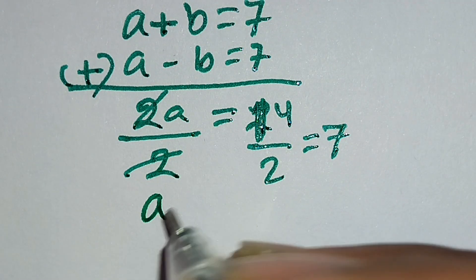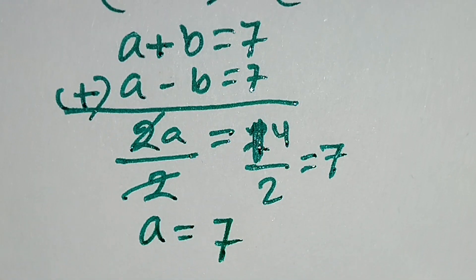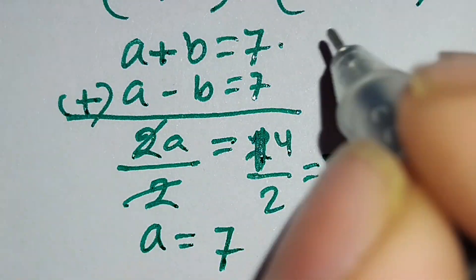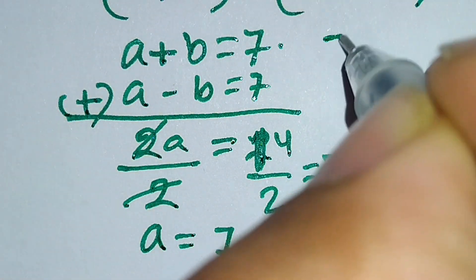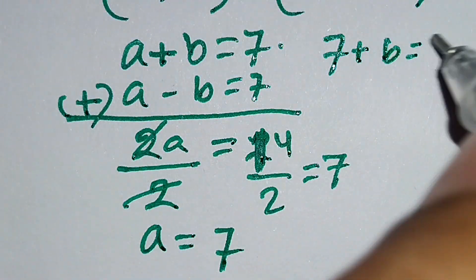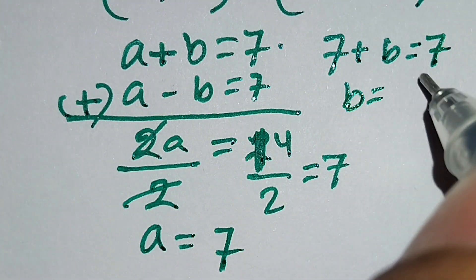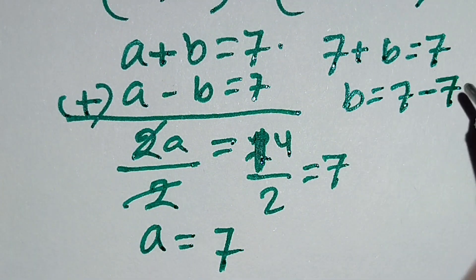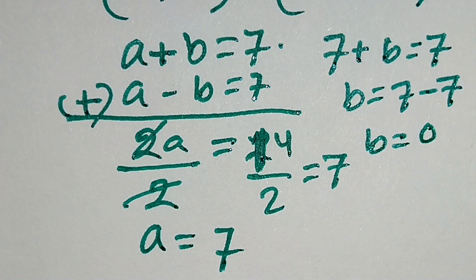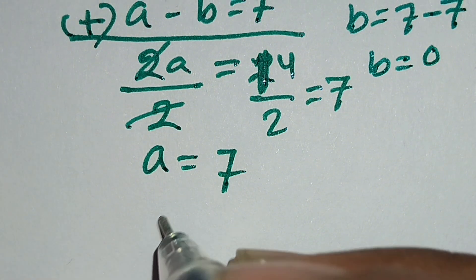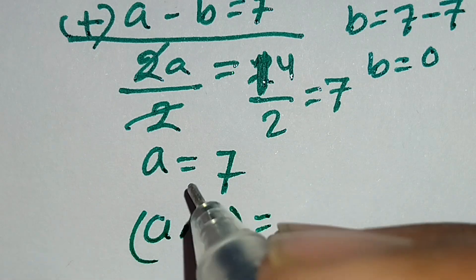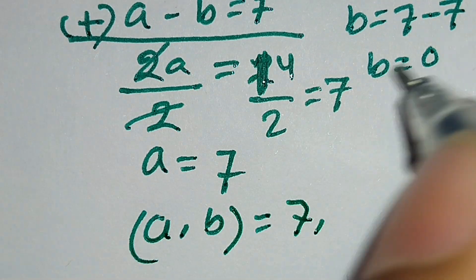So a equals 7. Putting this value of a into the equation: 7 plus b equals 7, so b equals 7 minus 7, which equals 0. Therefore from this case, a comma b equals 7 comma 0.